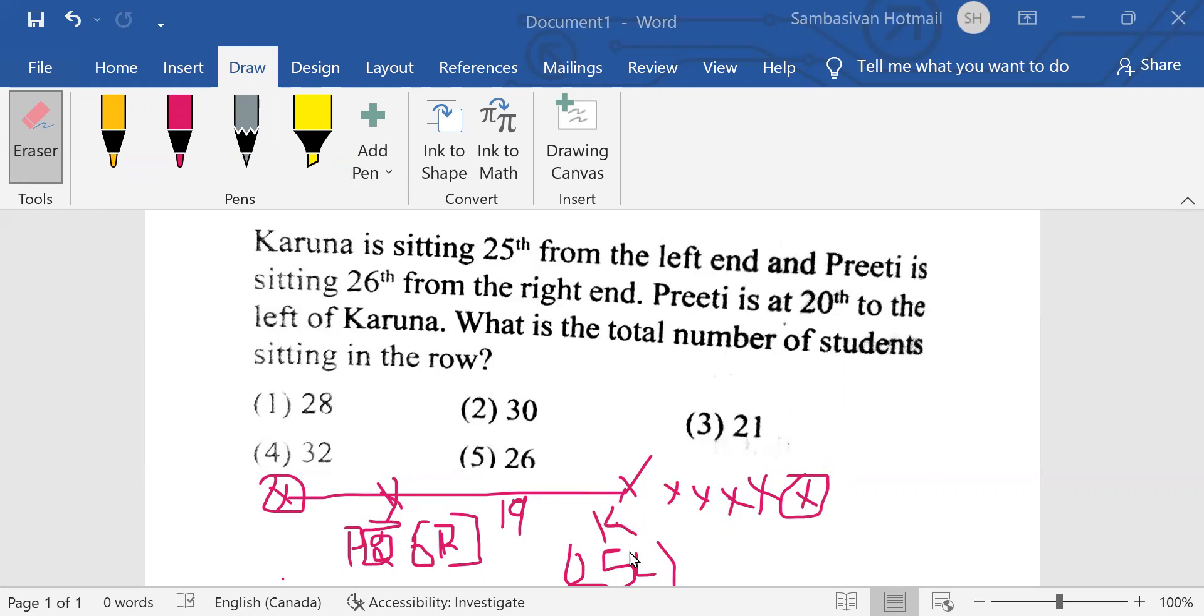Because Karuna is 25th from the left. If we take this way: one, two, three, four, five, six, and from here it's another 20. The 20th place is 26th, so that means totally there are 30 students sitting in the row.